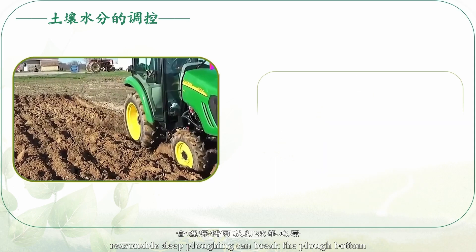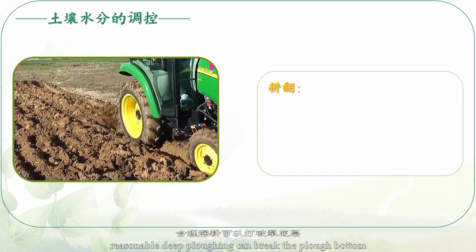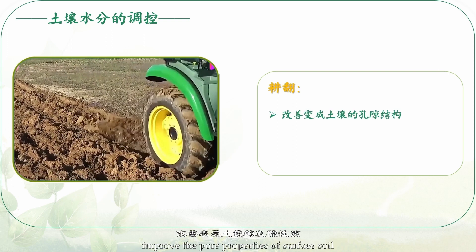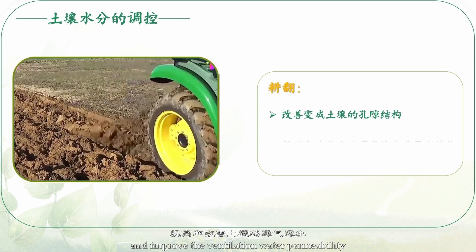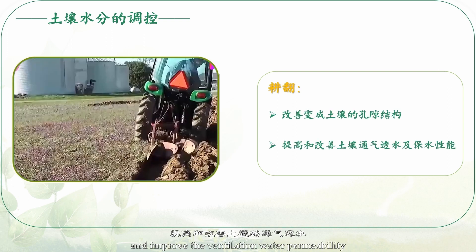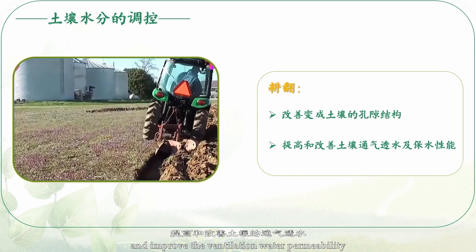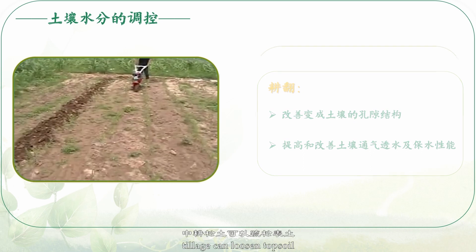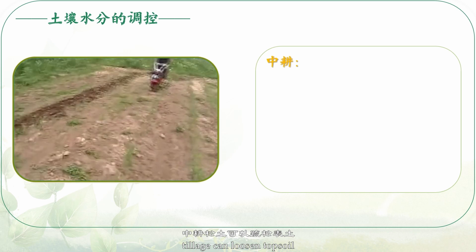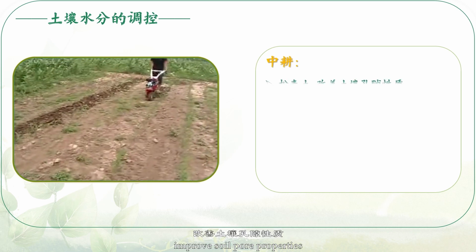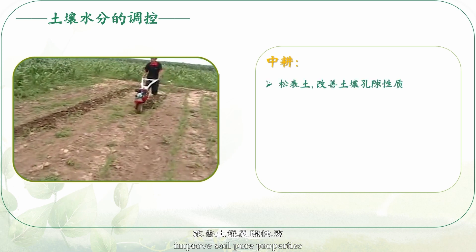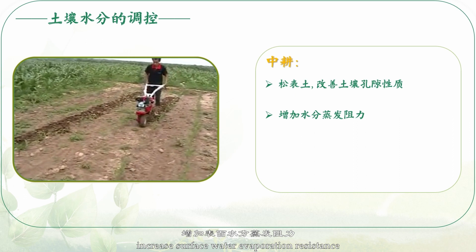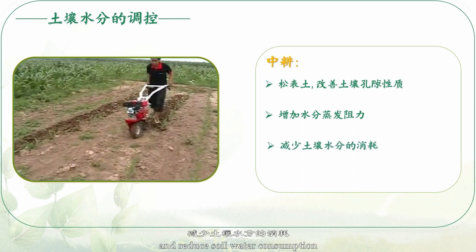4. Reasonable deep plowing can break the plow bottom, improve the pore properties of surface soil, and improve the ventilation, water permeability, and water retention of soil. 5. Inter-tillage can loosen topsoil, improve soil pore properties, increase surface water evaporation resistance, and reduce soil water consumption.